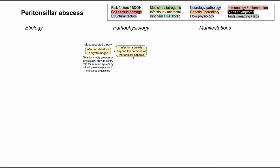When the bacteria grows too much, you have infection that spreads beyond the confines of the tonsillar capsule. This, by itself, can cause a peritonsillitis — inflammation of the space around the tonsils. There are some symptoms that come out of this, and it will be important to differentiate just a standard peritonsillitis or tonsillitis or sore throat from an actual peritonsillar abscess. We'll talk about the differentiating manifestations in just a second.